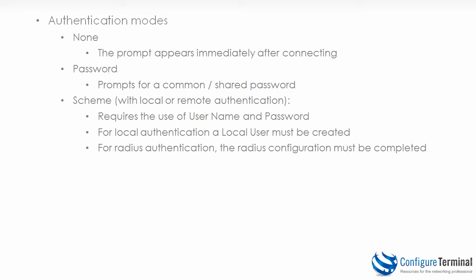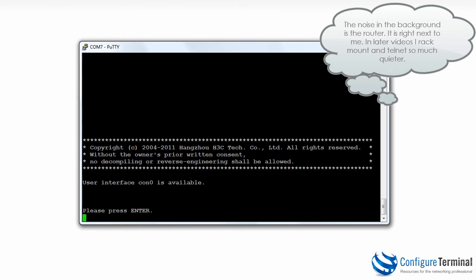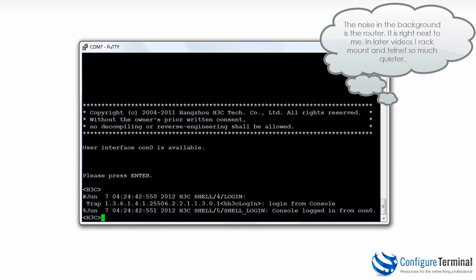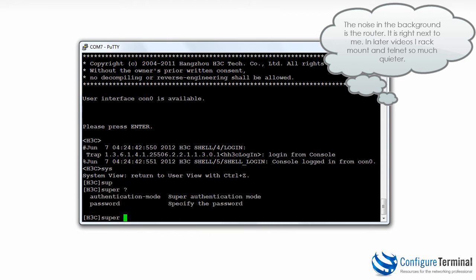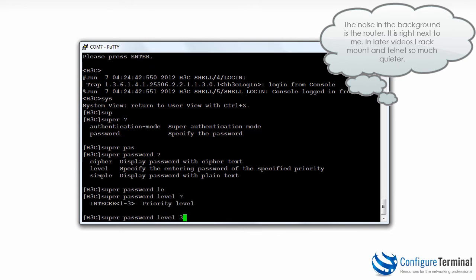A RADIUS or TACACS server would be required for centralized authentication of users. At the moment, if I quit out of the router and hit enter, I gain immediate access to user mode. System view allows me to gain full access with full privileges. To lock down the console, I type system view and then use the command super and specify a password — for instance, full level three.